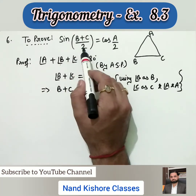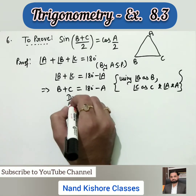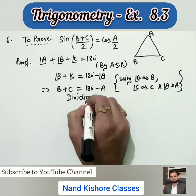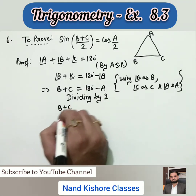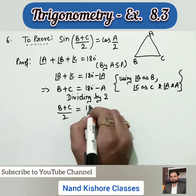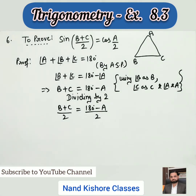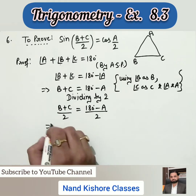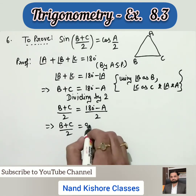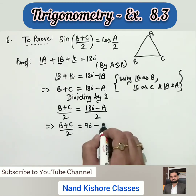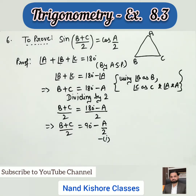I need (B + C)/2 on the left side, so I divide both sides by 2. This gives (B + C)/2 = (180° - A)/2. Simplifying: (B + C)/2 = 90° - A/2.